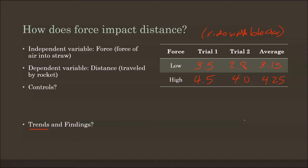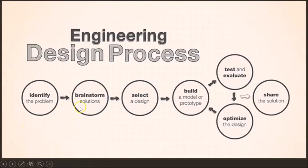Going back to our problem — making a straw rocket that goes the farthest — that means I'm going to have to provide an optimal amount of force. The more force I use, the farther my straw rocket will go. We came up with a solution, came up with and selected a design, built the prototype, and we have tested and evaluated. Now we have an opportunity to optimize the design.